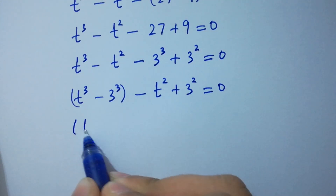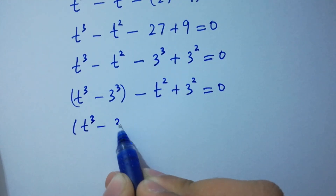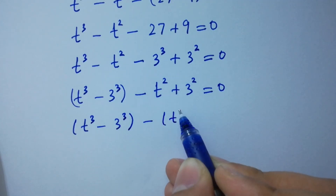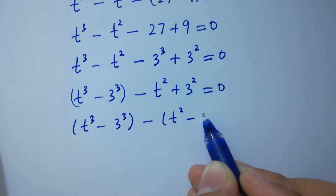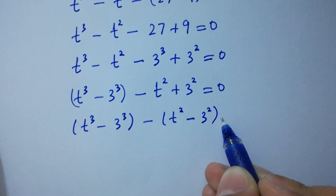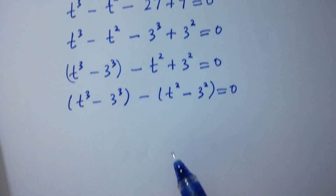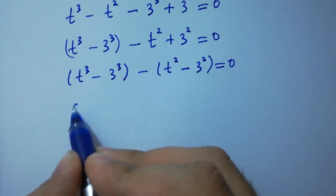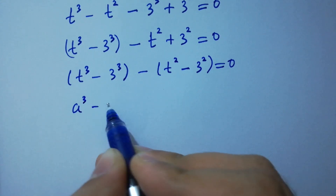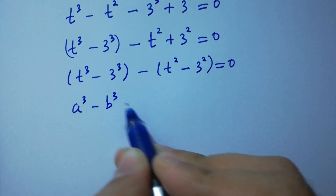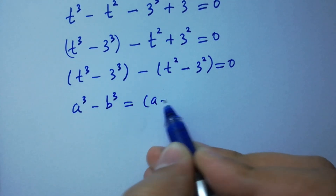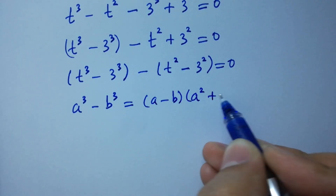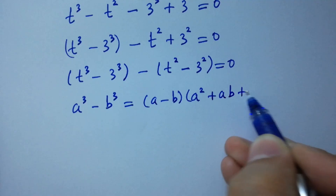So t cube minus 3 cube minus t square minus 3 square equal to 0. As we know, a cube minus b cube equal to a minus b, times a square plus ab plus b square.